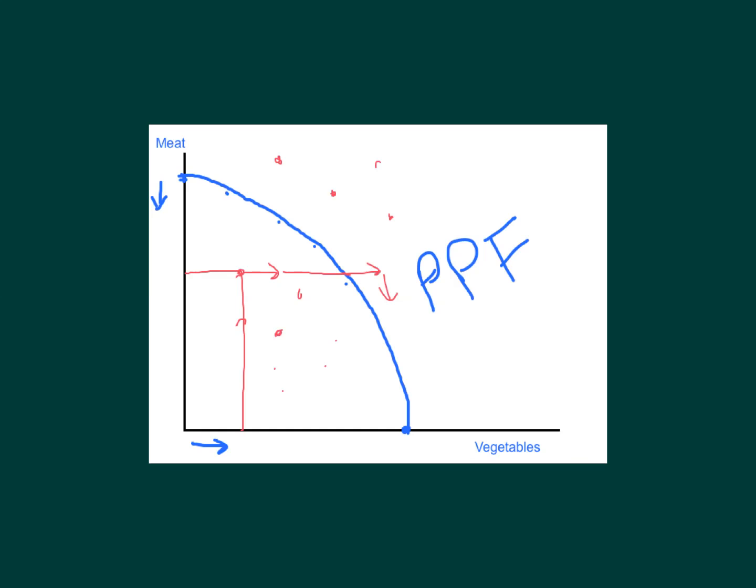The last thing to look at is the points outside the frontier. These are wonderful points of more meat and more vegetables than any of the points on the blue line. However, they're not possible — that's what we mean by production possibilities frontier: it's the most we could make of the two outputs, meat and vegetables.